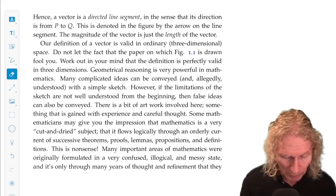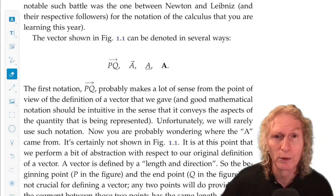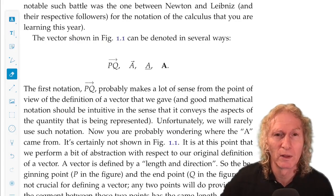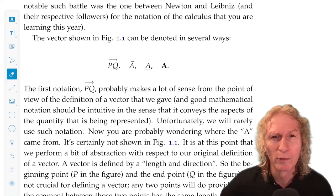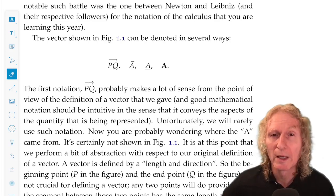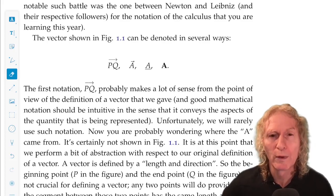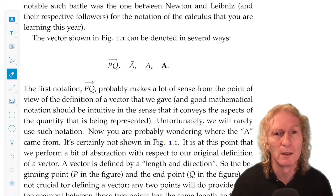So notation for vectors, well, we need to settle on something. We could have PQ with an arrow over it. That makes a lot of sense. It's a bit cumbersome. We could have A with an arrow over it. I don't like the arrows. Or we could have a Roman A with a line underneath it. That's what I use when I'm lecturing on the chalkboard or the whiteboard. Or we got a bold-faced A, bold-faced Roman A, and that's what I'm going to use in this book.